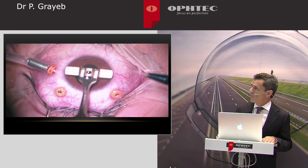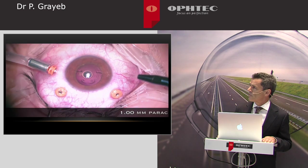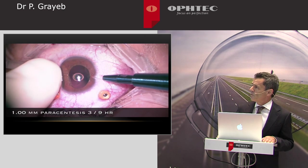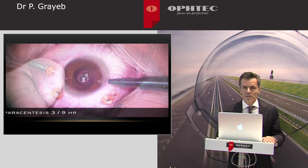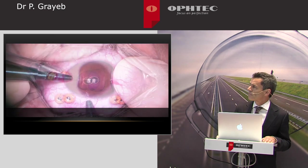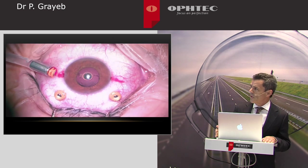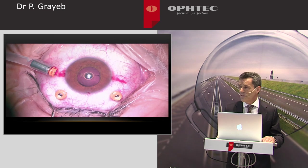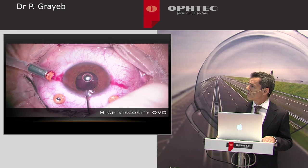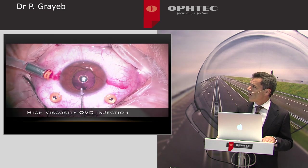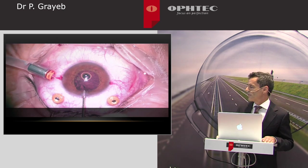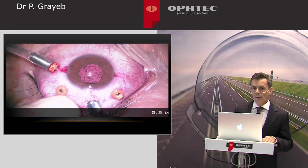Then we perform the implantation of the artisan lens. I like to mark the horizontal axis, and then we do one millimeter paracenteses at nine and at three o'clock. Then I like to use high viscosity OVD to protect the endothelium. After that, I enlarge the main incision to 5.5 millimeters.